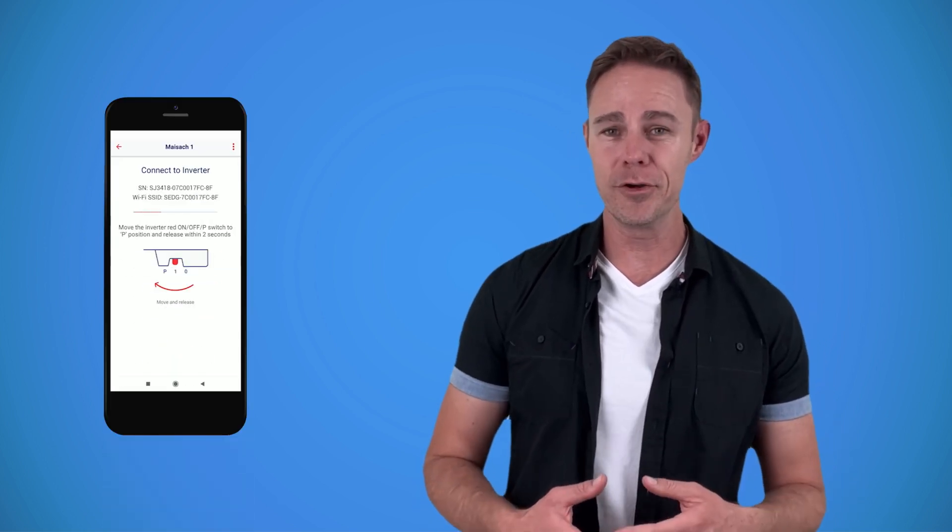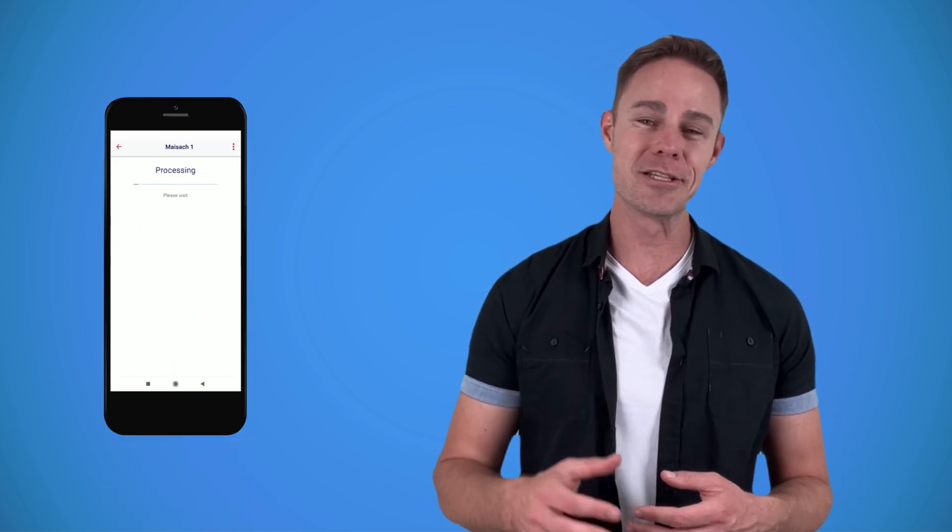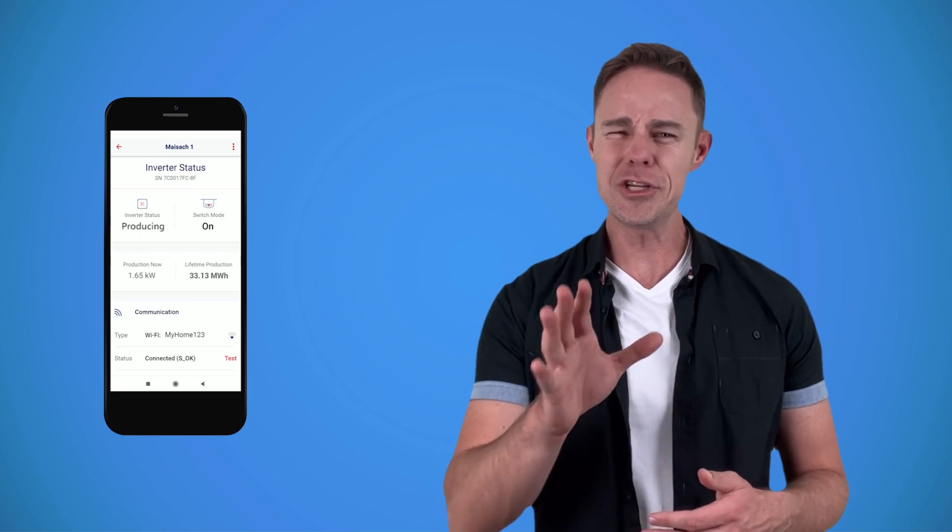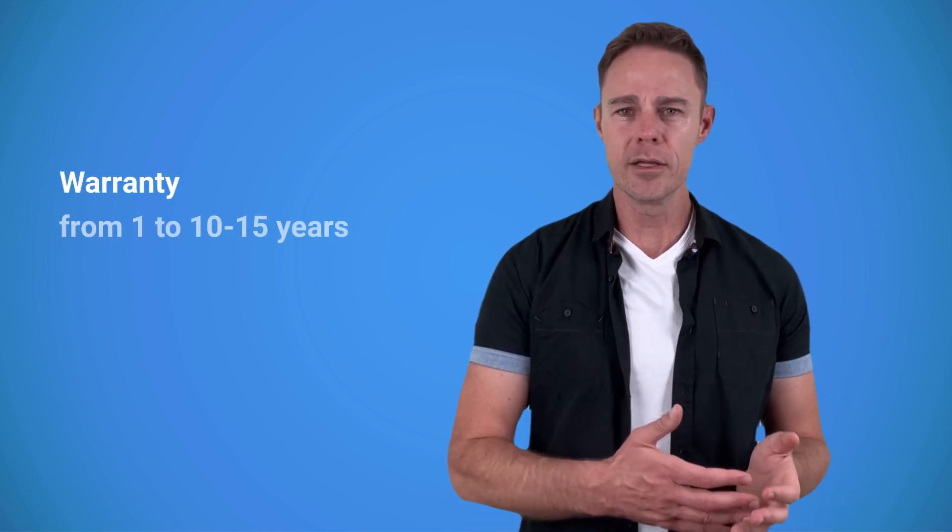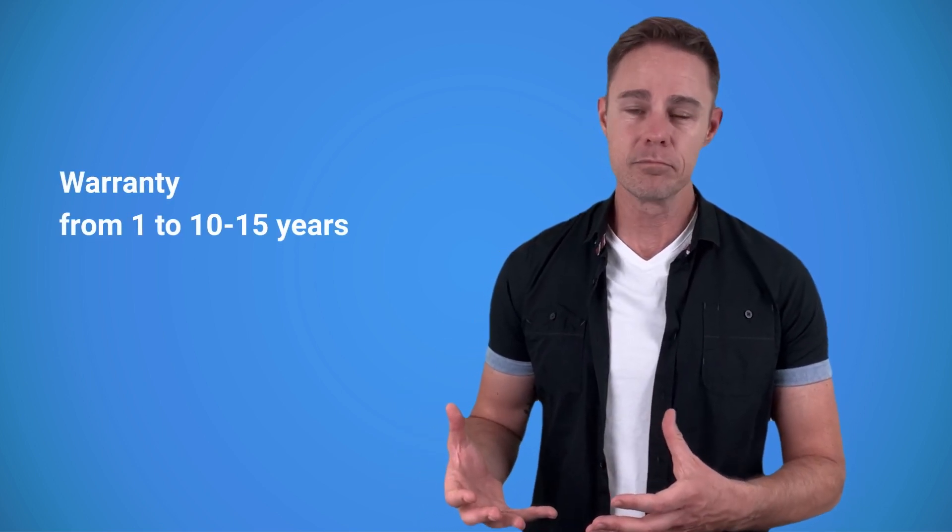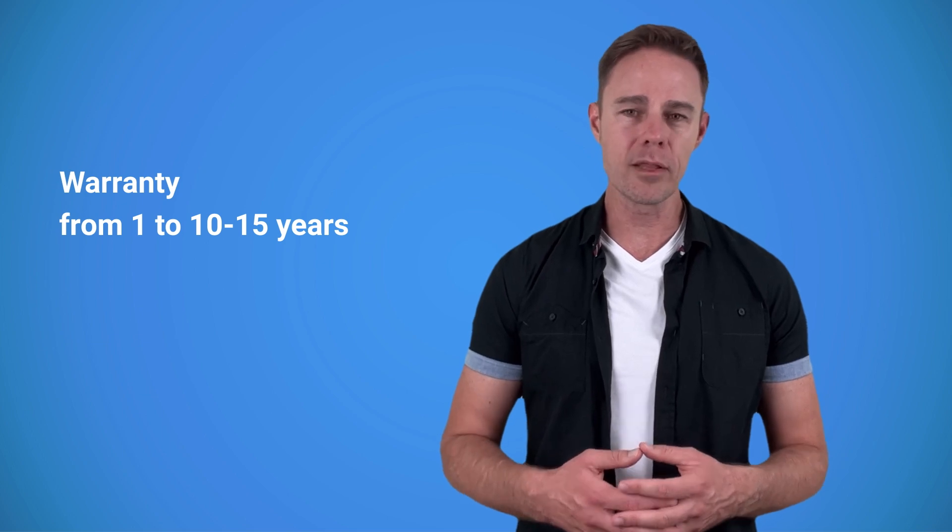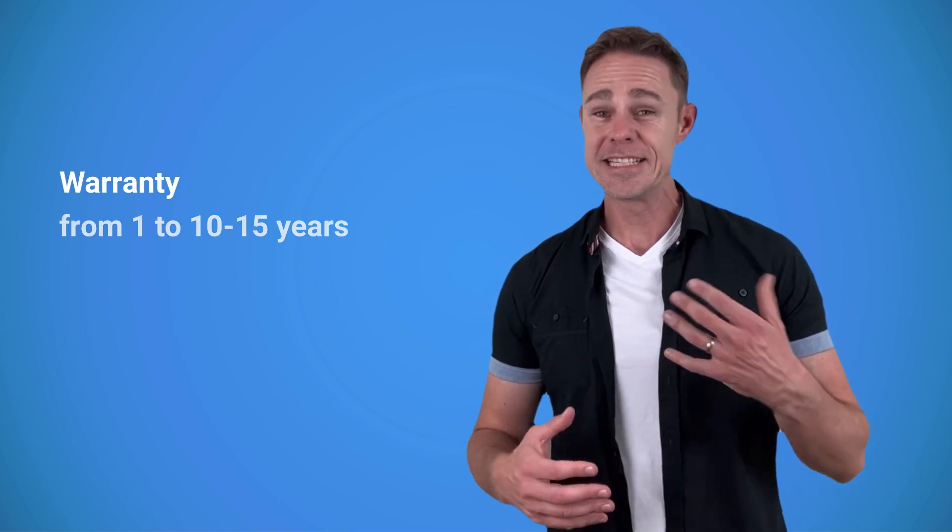Sometimes an inverter comes with an app for your smartphone which you can use to track your system's production. I suggest that you set it up right after the installation is complete. Home inverters usually come with a warranty from 1 to 10 to 15 years.